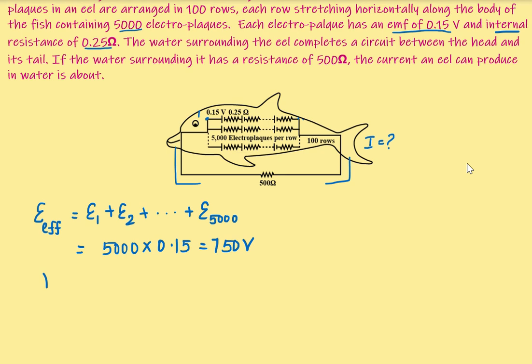And similarly, if you calculate the effective internal resistance, we have to add them all. Everything is in series. So there are 5000 resistances. So we have to multiply 5000 because each one is 0.25Ω and we will have 1250Ω.